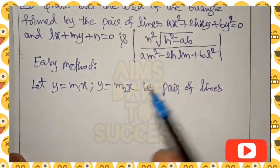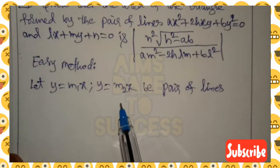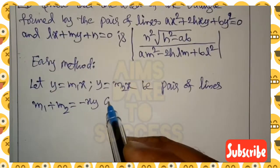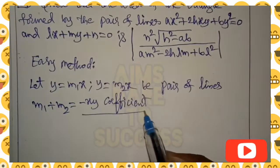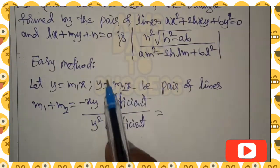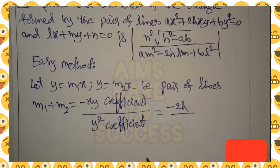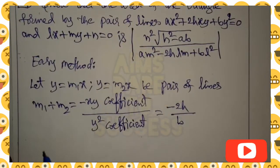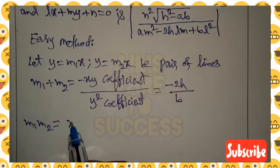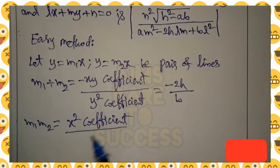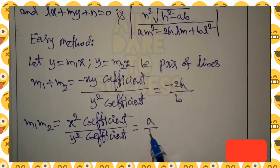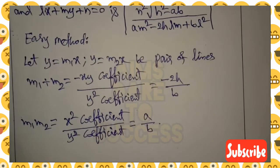Now I want to explain the easy method. If you verify material from other coaching institutes, this is the very easiest method. You can assume y = m1·x and y = m2·x. So the sum of roots: m1 + m2 = −(xy coefficient)/(y² coefficient) = −2h/b. Similarly, the product of roots: m1 · m2 = (x² coefficient)/(y² coefficient) = a/b. These are the m1 + m2 and m1·m2 values.